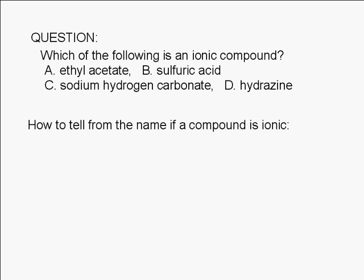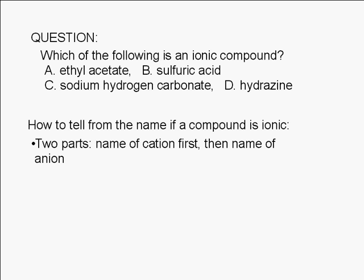We can easily tell from the name of a compound if it is ionic. The name of an ionic compound consists of two parts. The first part is always the name of the cation, and the second part is the name of the anion.